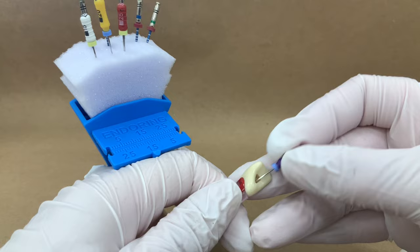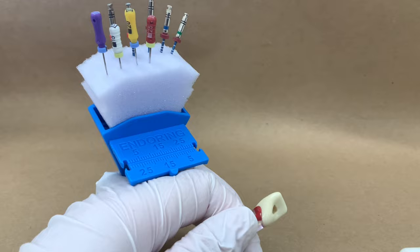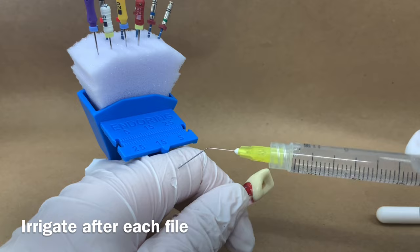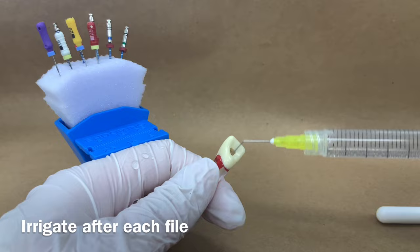The file should be used until it has minimal binding or resistance within the canal. Remember to irrigate after each file. This prevents the debris from getting pushed and compacted towards the apex, which will block the canal and prevent you from maintaining apical patency.